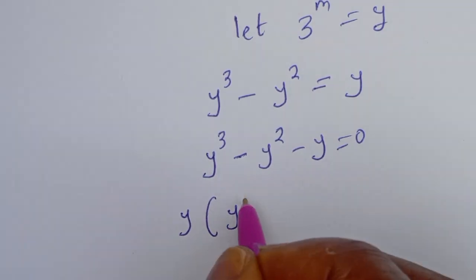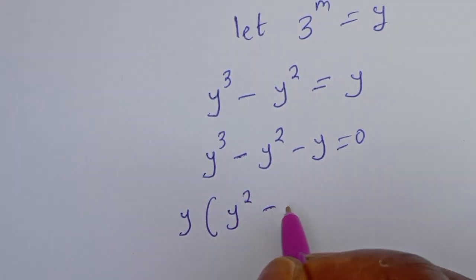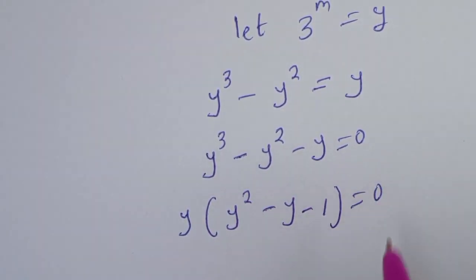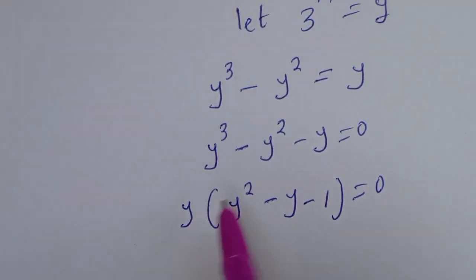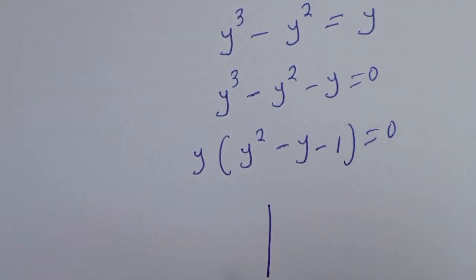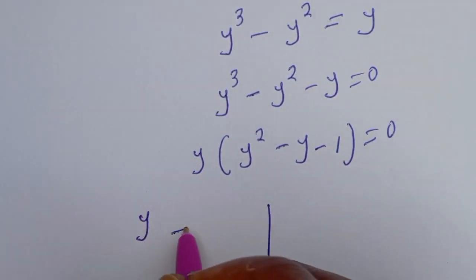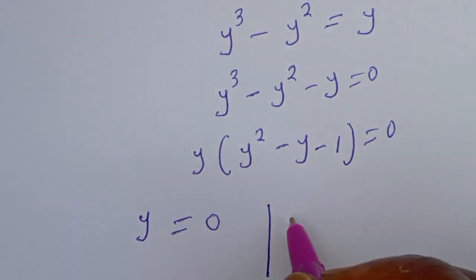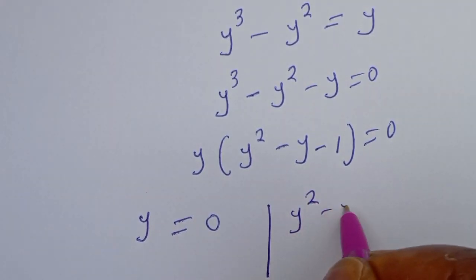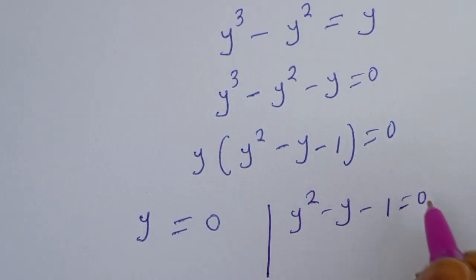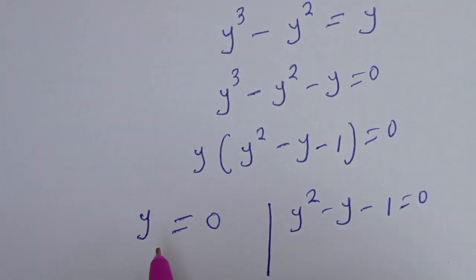We can factor Y out: Y times bracket Y squared minus Y minus 1 is equal to zero. There are two cases here. The first case is Y is equal to zero, and the second case is Y squared minus Y minus 1 equal to zero — let's call this Y1.